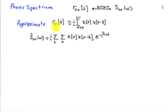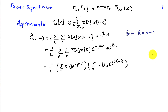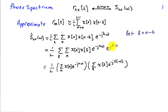Because we're taking the discrete time Fourier transform with respect to k, which is the sequence index in r, and then the sum over n is the averaging used to approximate the expectation. We introduce a new variable l as n minus k and substitute this into the summation. Then we have the sum over l, the sum over n, x of n, x of l, e to the minus j n omega, and e to the minus j l omega.